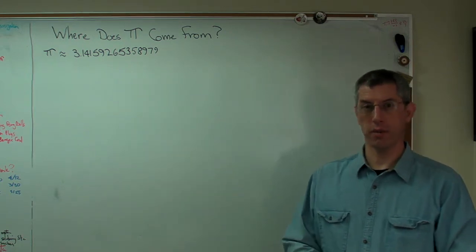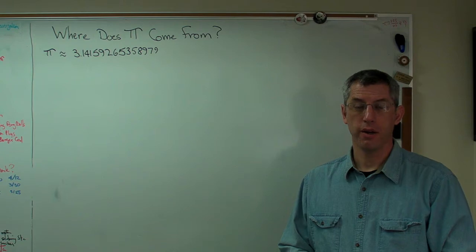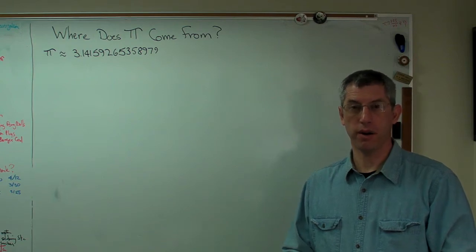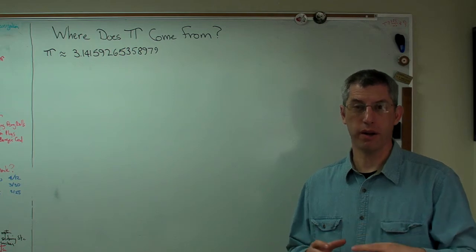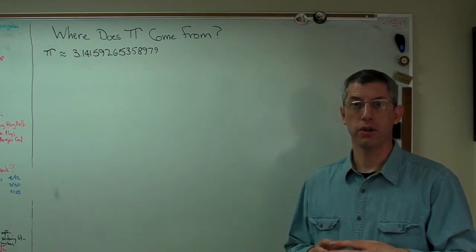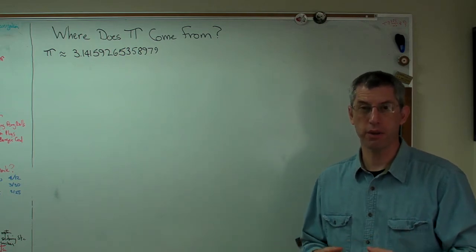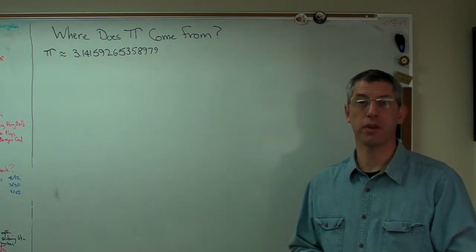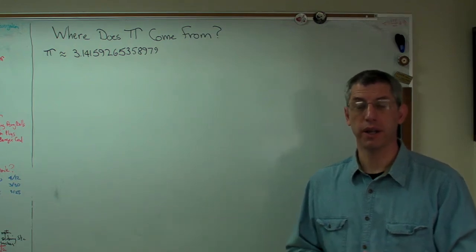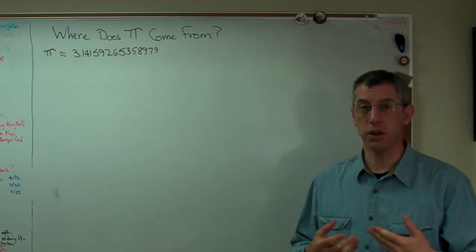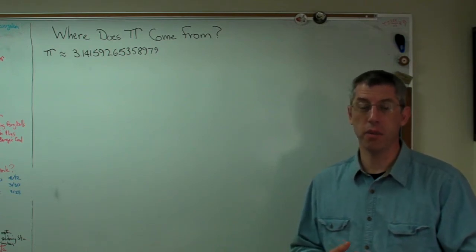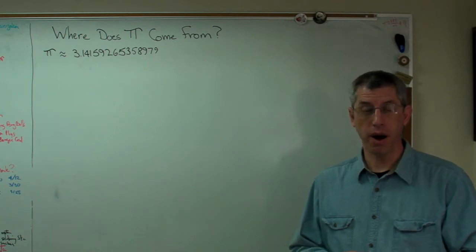The first video showed how Archimedes calculated pi using a simple geometric argument where he inscribed regular polygons inside a circle and circumscribed regular polygons outside a circle and simply added up the circumference of those two polygons. It worked, but it didn't converge very fast. That means it took a lot of calculations to come up with an accurate approximation to pi.